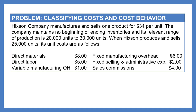Hickson Company manufactures and sells one product for $34 per unit. The company maintains no beginning or ending inventories, and its relevant range of production is 20,000 to 30,000 units. When Hickson produces and sells 25,000 units, its unit costs are as follows: direct materials $8.00, direct labor $5.00, variable manufacturing overhead $1.00, fixed manufacturing overhead $6.00, fixed selling and administrative expense $2.00, and sales commissions $4.00.